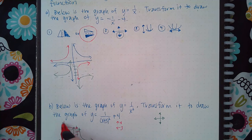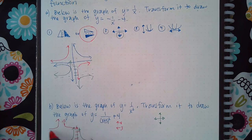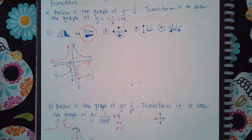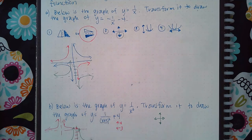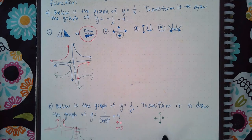The new graph will look like this. The horizontal asymptote will now be up at four and the vertical asymptote will now be at negative three.